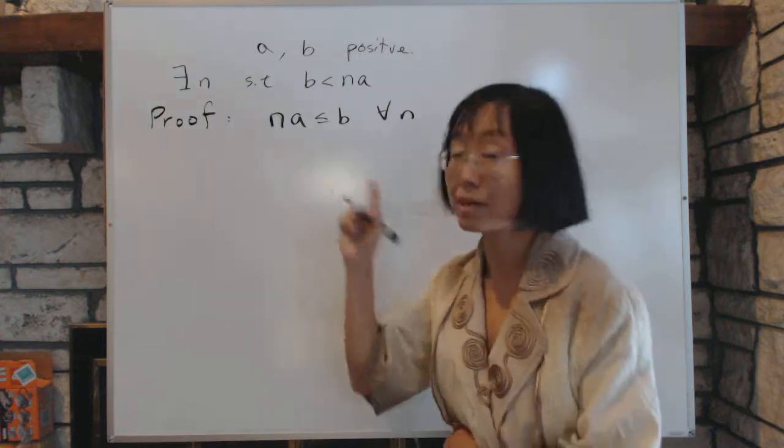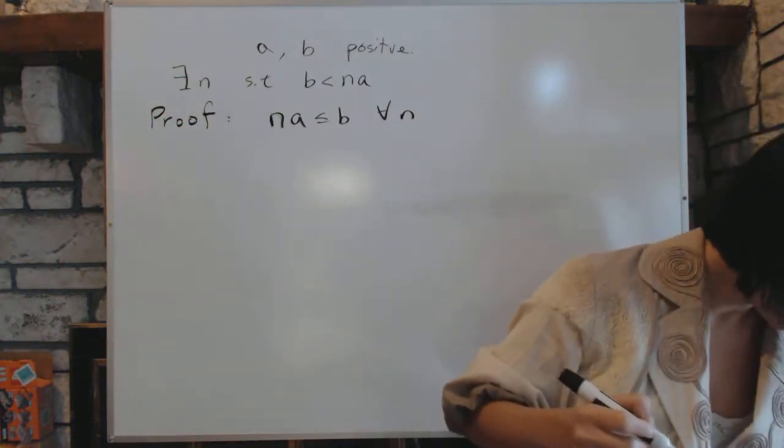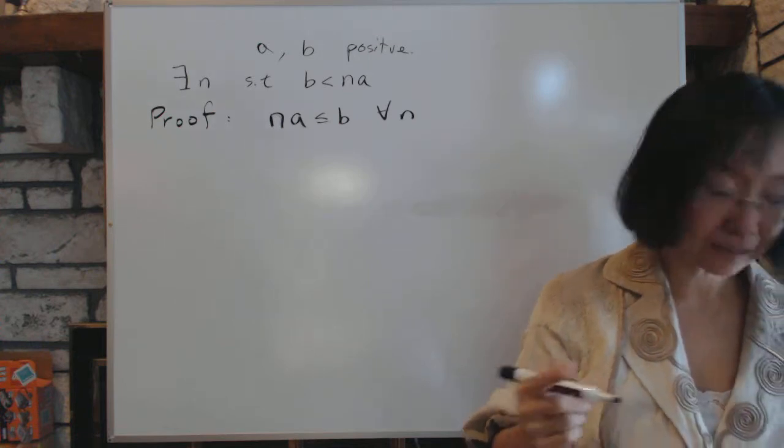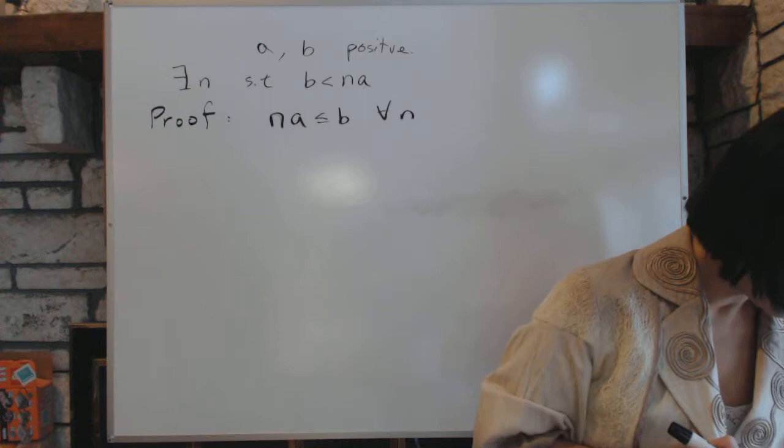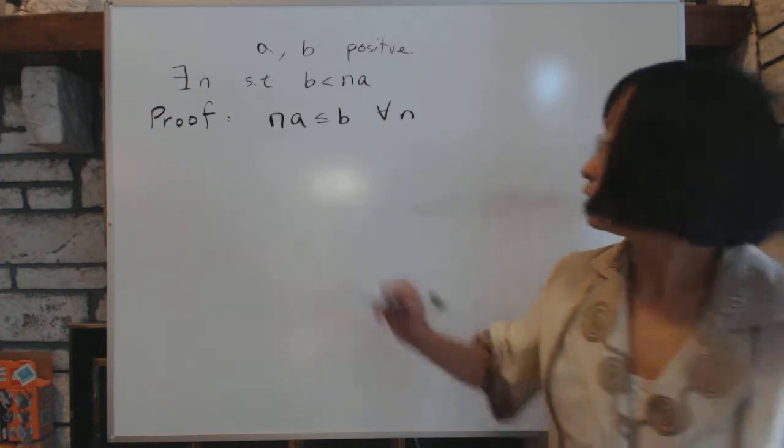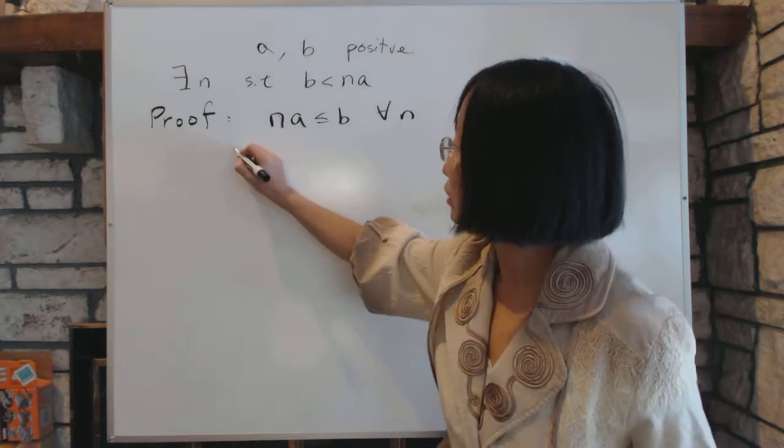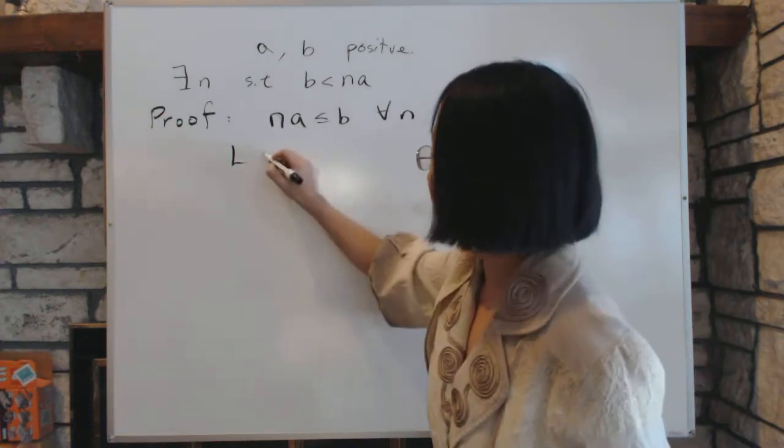It doesn't matter which N you pick, it's always going to be less than B for all positive integer N. And then we will define a cut. We'll define two groups. L will be all the numbers x such that x is less than NA for some N.